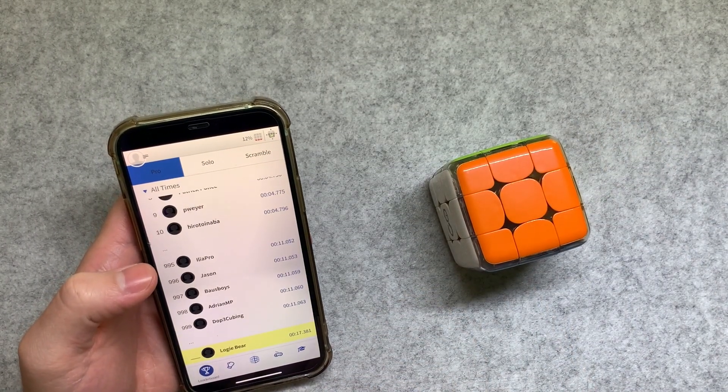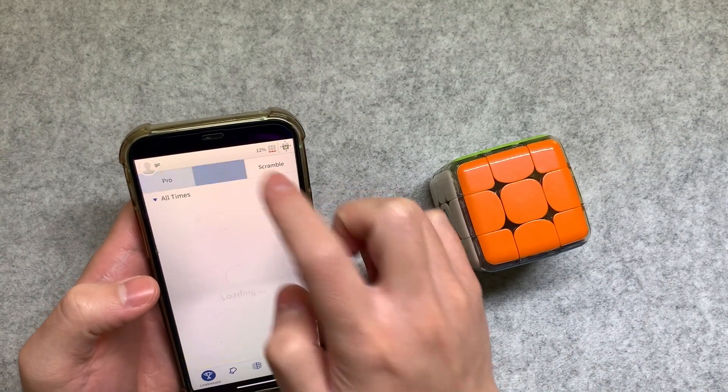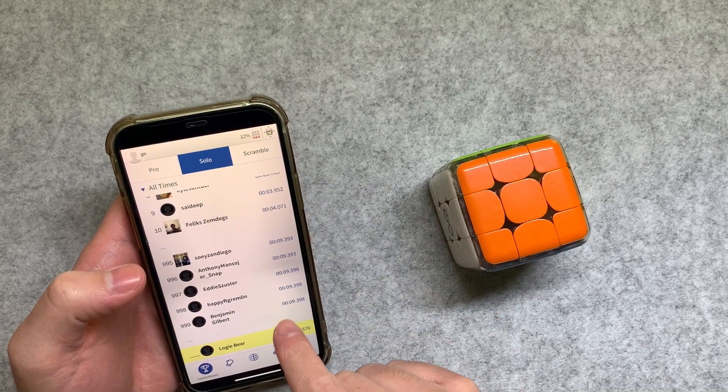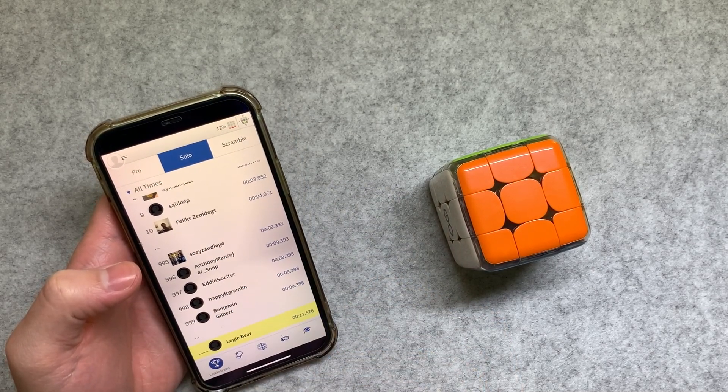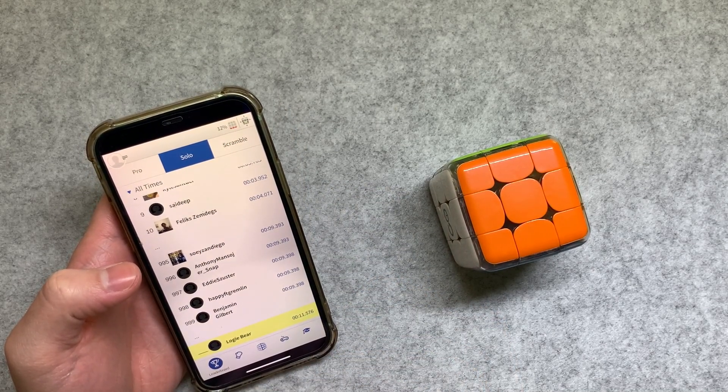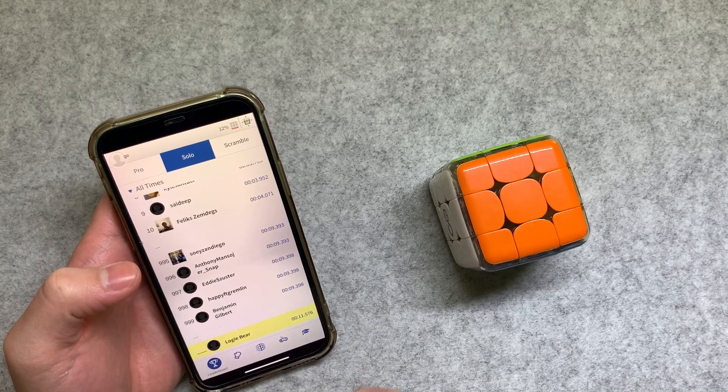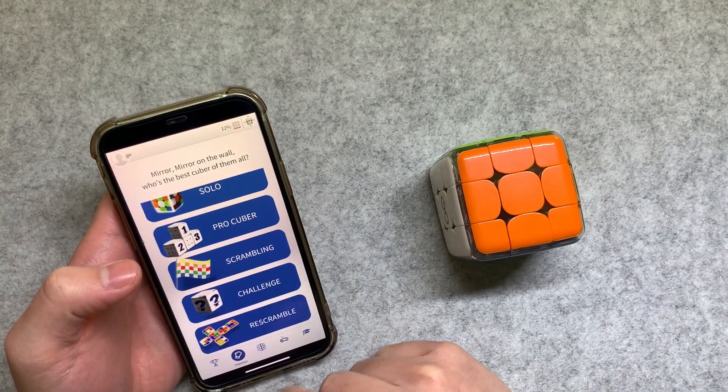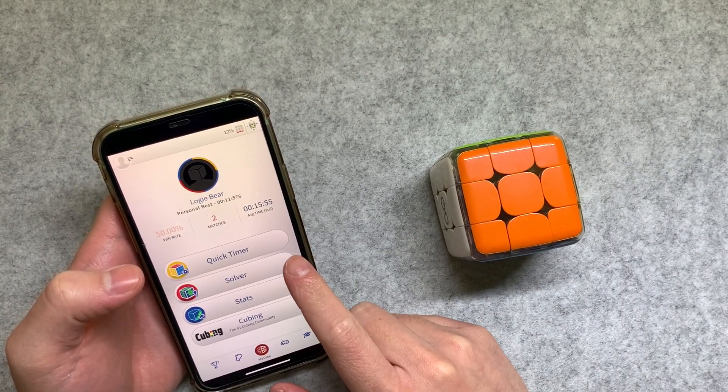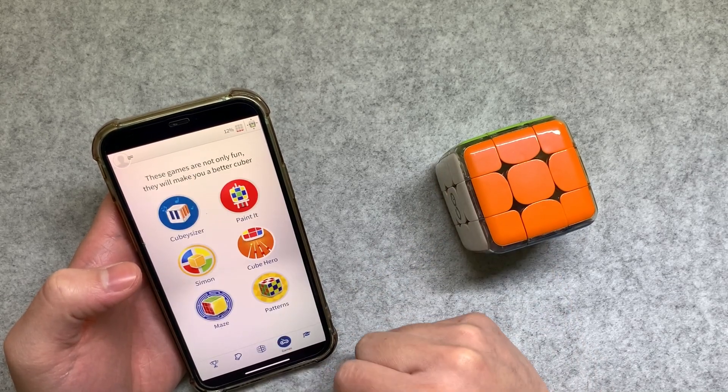These are all the modes. There's achievements I guess, tells you how fast you are. You have to get a sub 10 to be top 1000 it seems. Not sure if I can do that with this cube. These are the modes. Quick timer, solver stats. Just normal timing.